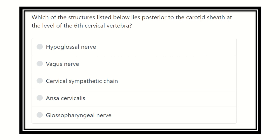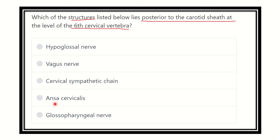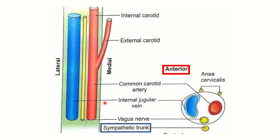Welcome to another question and answer session. The question is: which of the structures listed below lies posterior to the carotid sheath at the label of the sixth cervical vertebra? The options are hypoglossal nerve, vagus nerve, cervical sympathetic, ansa cervicalis, and glossopharyngeal nerve.